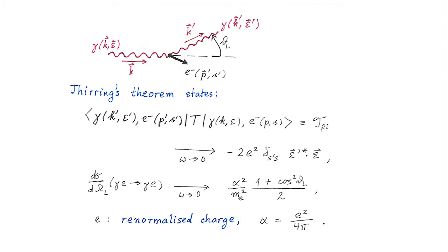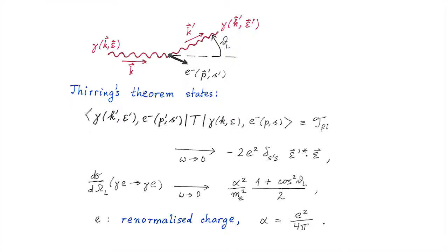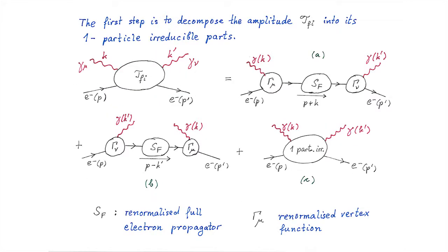We shall work in the rest system of the initial electron and consider the limit that the photon energy omega goes to zero. Thirring's theorem states that the T matrix element for this process, in the limit omega to zero, is given by minus twice the renormalized charge of the electron squared, the delta function for the spin indices, and epsilon prime times epsilon for the photon polarization vector. Thirring's theorem states that there are no higher order corrections. Period. That is the exact result.